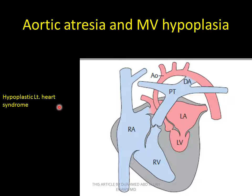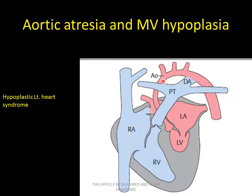Aortic atresia with mitral valve hypoplasia — hypoplastic left heart syndrome. This is aortic atresia — the aorta is diminishing in caliber, seen as an atretic aortic valve. Aortic atresia and mitral valve hypoplasia: hypoplastic mitral valve — hypoplastic left heart syndrome.